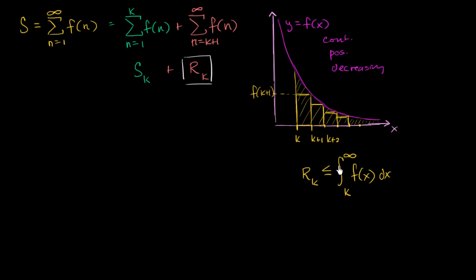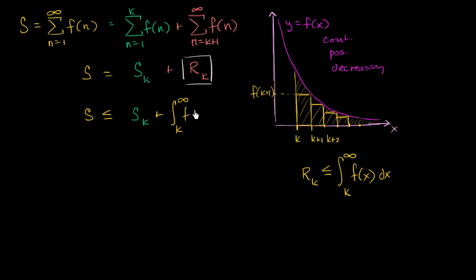So one way to think about it is that our R sub k is less than or equal to the improper integral from x equals k to infinity of f(x) dx. That essentially puts an upper bound on R sub k. And this is already interesting, because since S equals the partial sum plus R sub k, and R sub k is less than that integral, we can say that S is going to be less than or equal to our partial sum S sub k plus the improper integral from k to infinity of f(x) dx. So just like that, if we're able to compute these two things, we're able to put an upper bound on our actual sum.